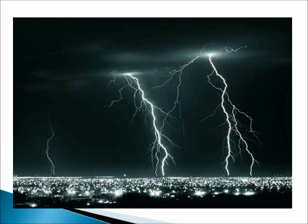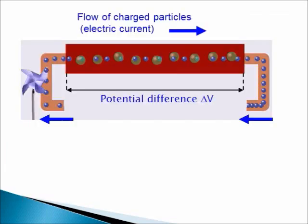We will work out several equations that are widely used to describe electric currents in a wide range of situations. Here is the basic situation that we will consider. Imagine a piece of material with potential difference ΔV applied across it. The potential difference creates electric fields inside the material. Every material has huge numbers of charged particles that can move relatively freely — typically, these particles are electrons and ions.